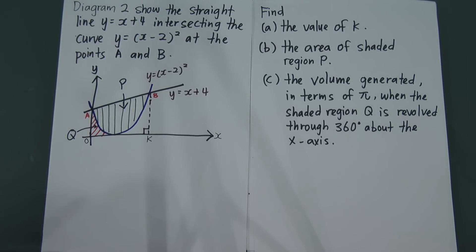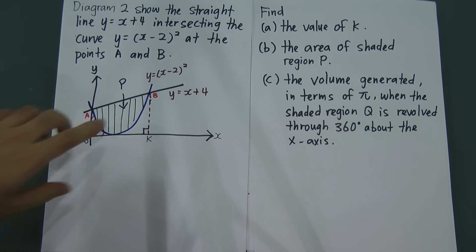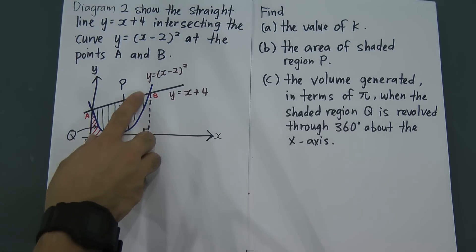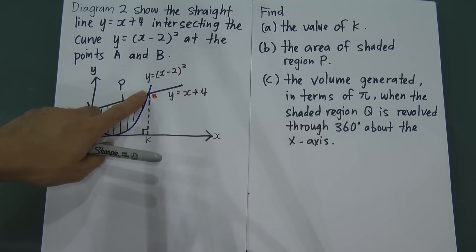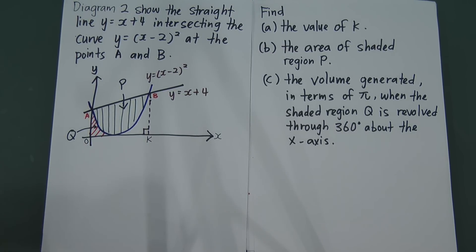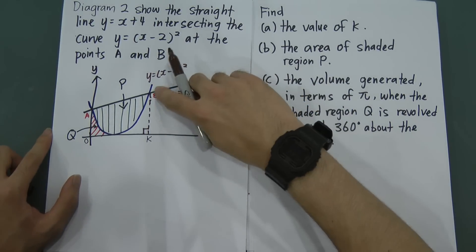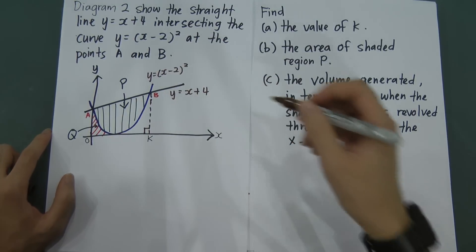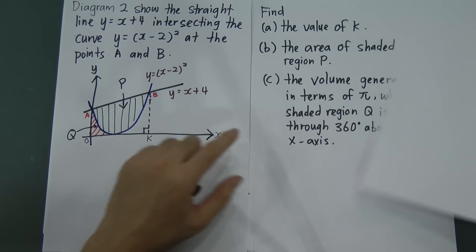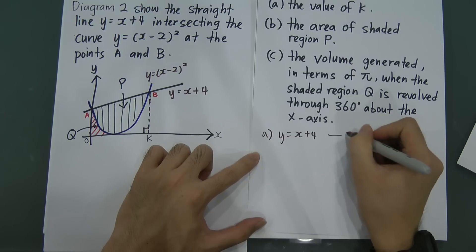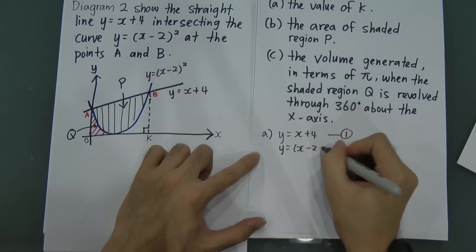For part A, he asks us to find the values of k. In order to find the values of k, we have to use the intersection point method. When you find the intersection point, the way you can find the coordinate is you substitute y into the y — this is called the simultaneous equation method. So what I do in order to find the coordinate B, which is the x value for k, I will substitute y into y. For part A, I put y equal to x plus 4 as the first equation, and y equal to x minus 2 squared as the second one.